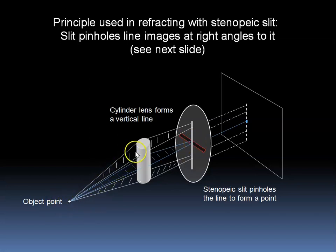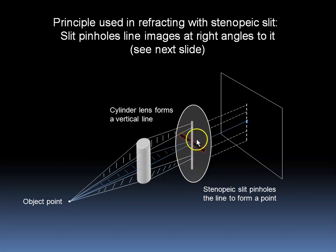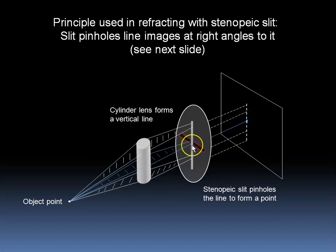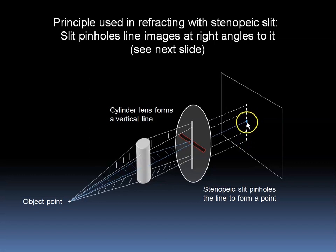Here we show an object point being refracted by a cylindrical lens, in which case the object point ends up as an image line. The image line then reaches the Stenopaeic Slit, and instead of showing up as a line on the screen behind the aperture, it only shows a point, because only one small section of this vertical line makes it through the horizontal Stenopaeic Slit. In this way, we have described a pinhole effect of this vertical line — we have reduced what would have been a blur line into an image point.